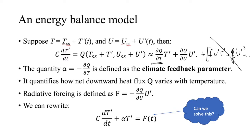The term dQ/dT is called the climate feedback parameter — it tells you how much heat is pumped into the system when you change the temperature a little bit. The term dQ/dU · U' defines the radiative forcing. Rewriting, we call minus dQ/dT as alpha (the climate feedback parameter) and the forcing term as minus f, so the equation becomes: C · dT'/dt = -α·T' + f. This is just a redefinition at this point — f in general is some complicated function that ultimately depends on time.